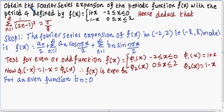The problem is to obtain the Fourier series expansion of the periodic function f(x) with period 4, defined as f(x) = 1 + x for −2 ≤ x ≤ 0, and f(x) = 1 − x for 0 ≤ x ≤ 2, and hence deduce that the sum σ (n=1 to ∞) of 1/(2n−1)² equals π²/8.